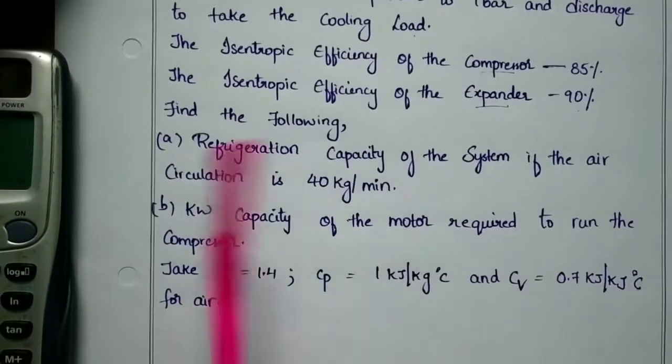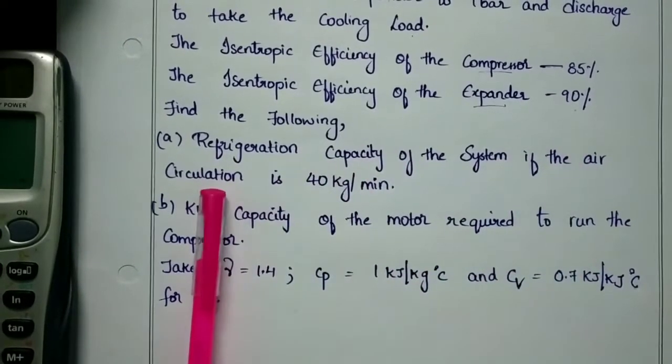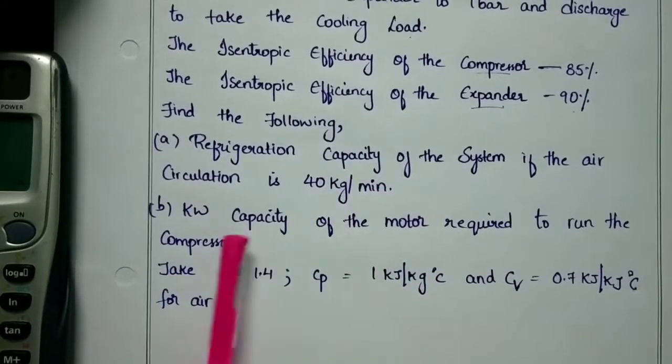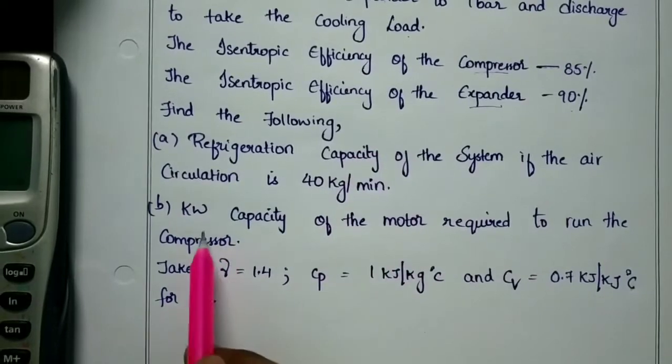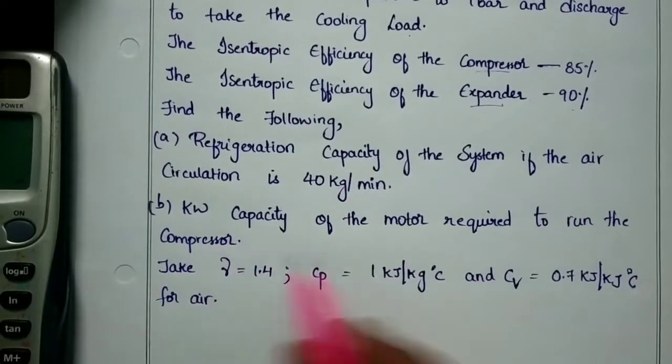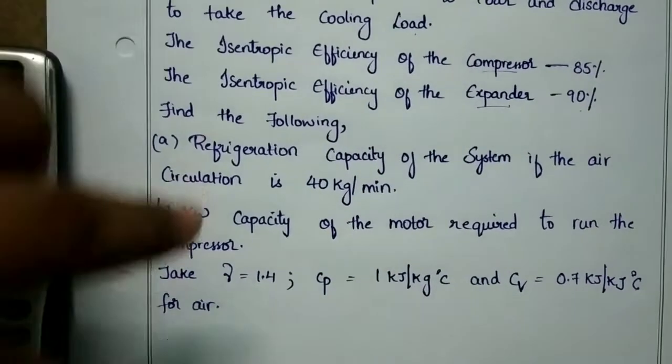I will find the refrigeration capacity of the system if the air circulation is 40 kg per minute, and the kilowatt capacity of motor, that is power required to drive the compressor.